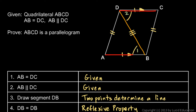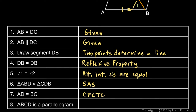We know AB equals DC because that was given, and we know AD equals BC because we just showed that in the previous step — those triangles are congruent, so those two sides must be equal. Now we have both pairs of opposite sides equal, so ABCD must be a parallelogram. We're invoking the theorem proved earlier: if a quadrilateral has equal opposite sides, then it is a parallelogram. That theorem is proven, so we can use it as a reason here.